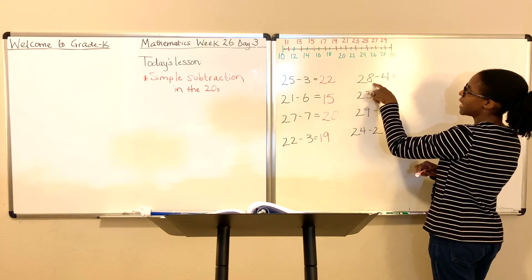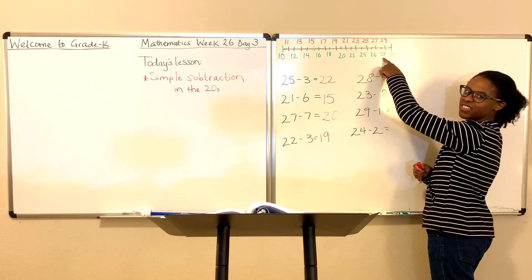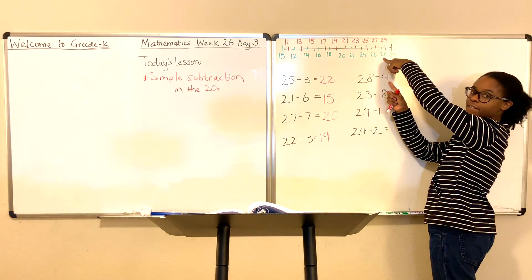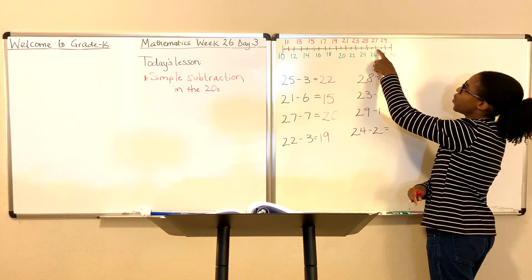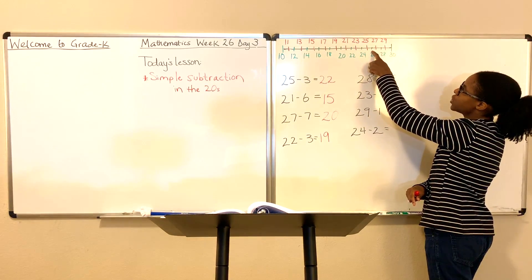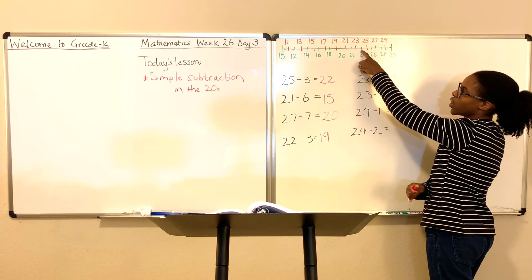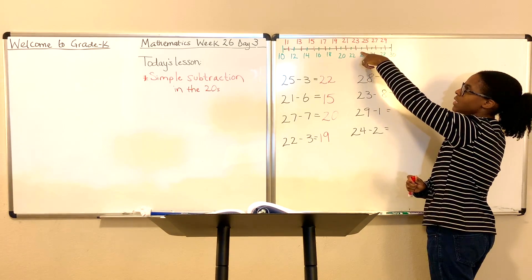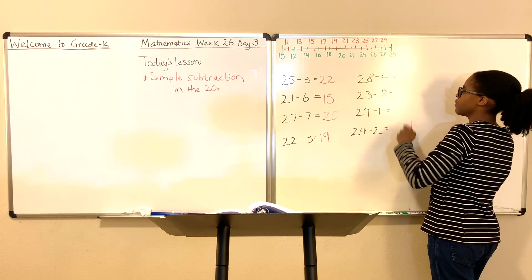28 minus 4. Come up to the number 28 and count backwards by four: one, two, three, four. What number does the line land on? It lands on 24.